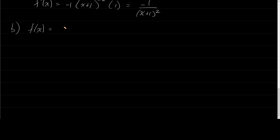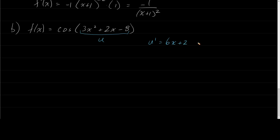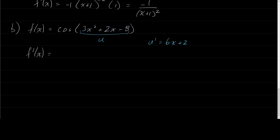Let's look at another one. If I had f of x equal to cosine of 3x squared plus 2x minus 8. The inside function is 3x squared plus 2x minus 8, so u prime would be 6x plus 2. f prime of x is the derivative of the outside function. The outside function is just cosine, so the derivative of cosine is negative sine. We have negative sine of 3x squared plus 2x minus 8, times the derivative of the inside, which we already calculated to be 6x plus 2.